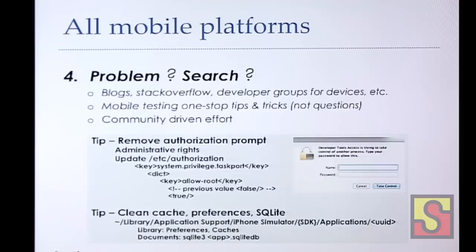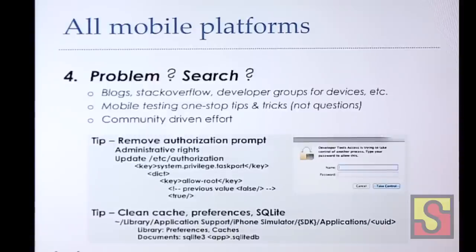Looking at what's general for all mobile platforms: if you're the forerunner developing tests on different devices with different problem spaces, currently when you have a problem you search — you search blogs, developer groups. It's really painful; every little stumbling block, you spend time searching. One example: removing an authorization prompt. If you run with new Xcode and kick up Instruments, you get a prompt asking if another process wants to take control, which totally blocks a clean run in a CI environment. I'd really like to see a community-driven site with tips and tricks that people have actually solved.